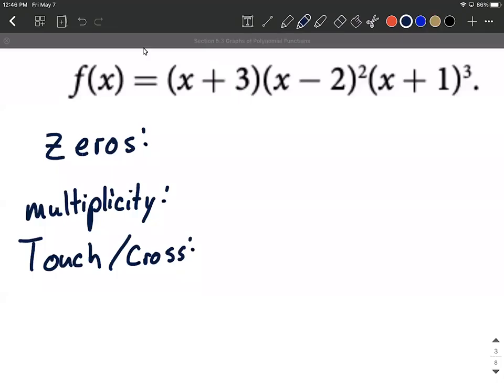All right, we're getting a polynomial in factored form, and our goal here is to pick out all the zeros, their multiplicities, and tell whether they're going to touch or cross.